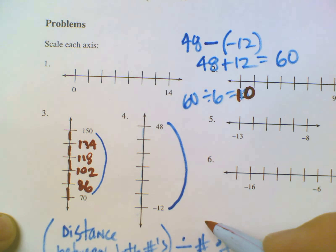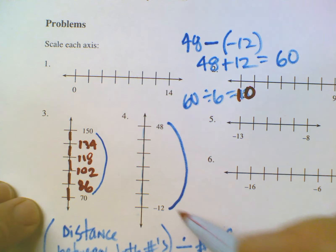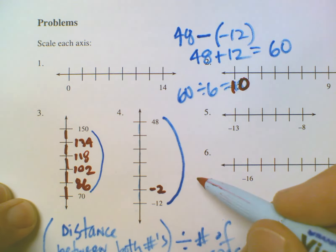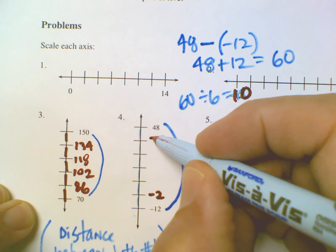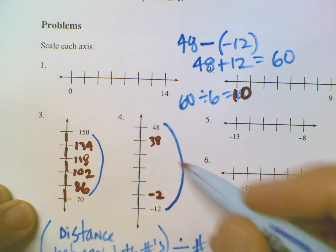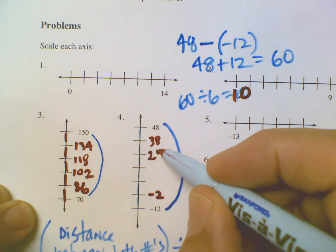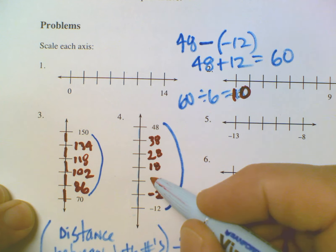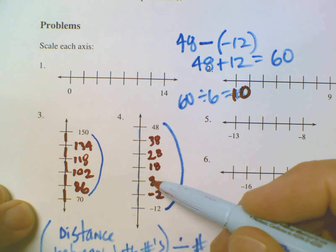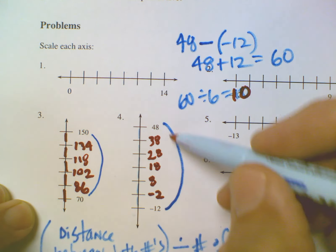So watch: negative 12 plus 10 is negative 2. I'm going to work my way up in this case, or I could work my way down. I could go 48 minus 10 is 38. Either way, 38 minus 10 is 28, 28 minus 10 is 18, 18 minus 10 is 8. Now 8 minus 10 is negative 2. So that's where the increments are for number 4.